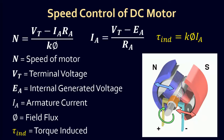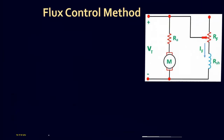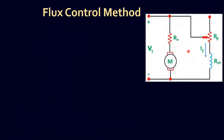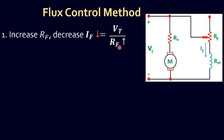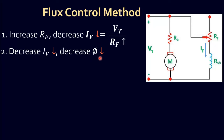Let's get started with the detail of the first method, which is field flux control. We add a variable resistor RF in series with the field winding. As we increase RF, field current IF is decreased according to this relation. As IF is decreased, field flux is also decreased.